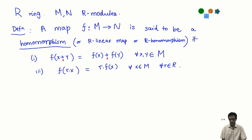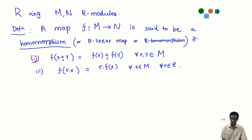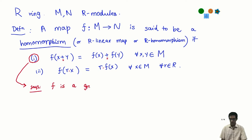One quick observation: if you forget for a moment that the modules have scalar multiplication and just think of them as abelian groups under addition, then looking at property one alone, a homomorphism of R-modules is in fact a homomorphism of the underlying abelian groups M and N. Property one says exactly that F is a group homomorphism from the abelian group (M, +) to the abelian group (N, +).